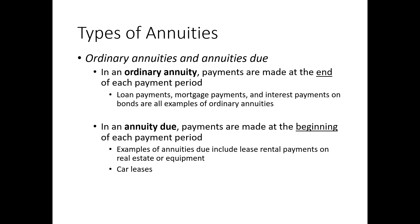Ordinary annuities versus annuities due: in an ordinary annuity, payments are made at the end of each period. With annuities due, payments are made at the beginning. For example, many loan payments — like a car loan — have the first payment due at the end of the month. Lease payments, on the other hand, are typically due at the beginning of every payment period, making them an annuity due. Shifting between the two using a calculator is not really a big deal, but we'll focus on ordinary annuities.